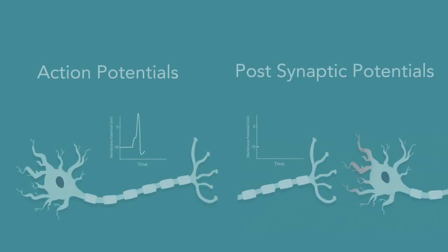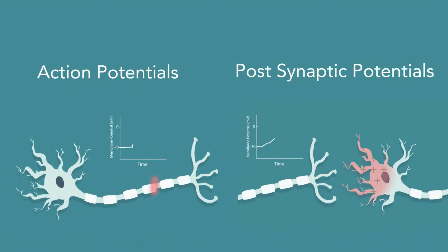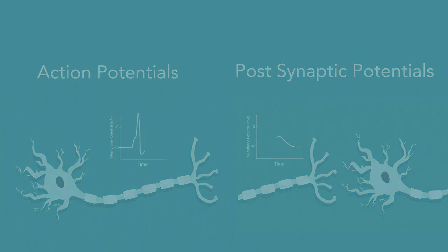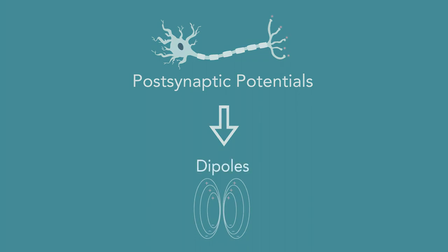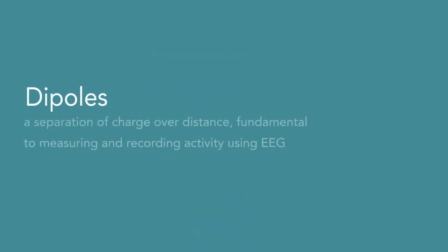In the first animation, we discussed how neurons communicate with each other and presented some of the differences between action potentials and postsynaptic potentials. In this video, we will discuss how these properties of postsynaptic potentials generate dipoles. Dipoles are defined as a separation of charge over distance and are fundamental to measuring and recording activity using EEG.